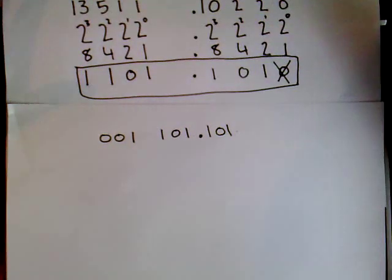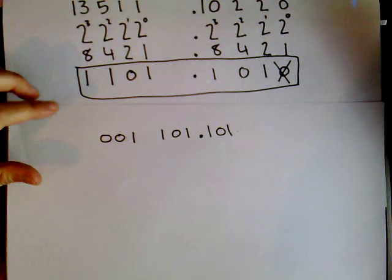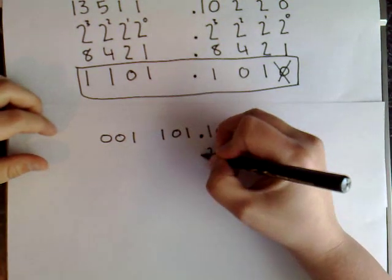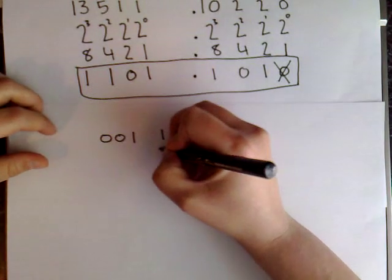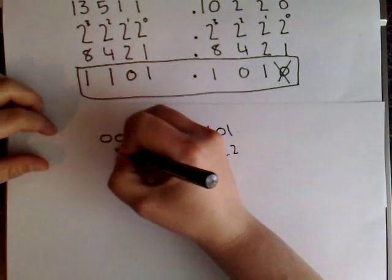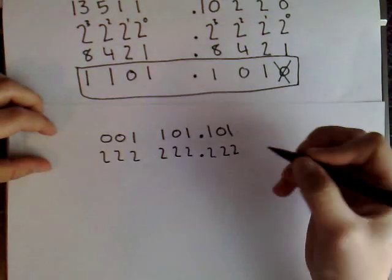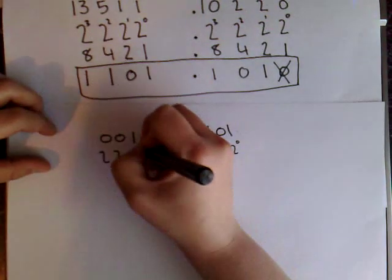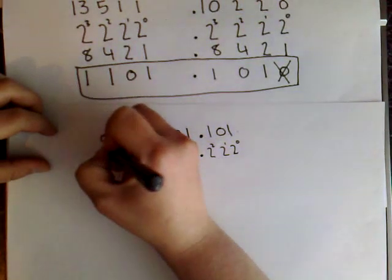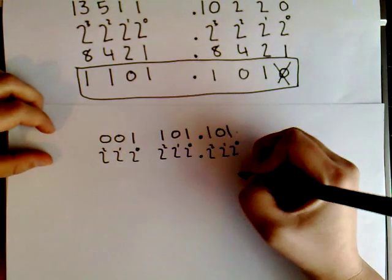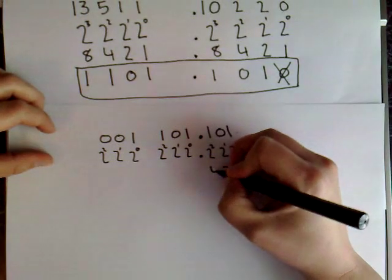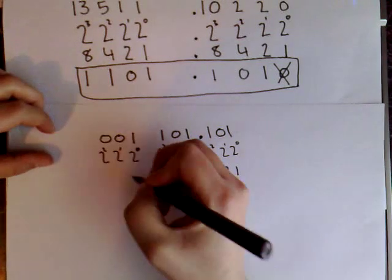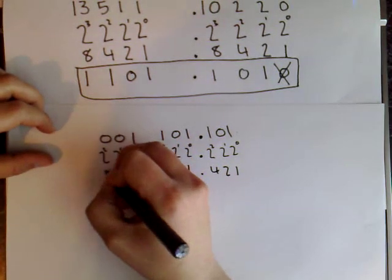So what I do now is, I write out a series of twos again for each group. And I raise them to a power. So, 0, 1, 2. 0, 1, 2. 0, 1, 2. If I work out what these powers will be. They'll be 1, 2, 4. 1, 2, 4. 1, 2, 4.